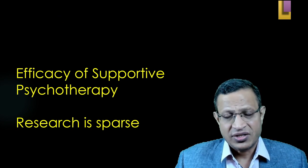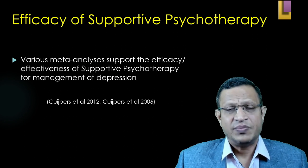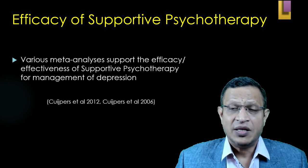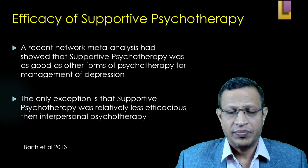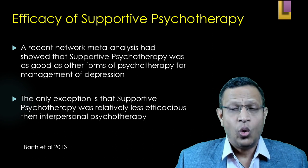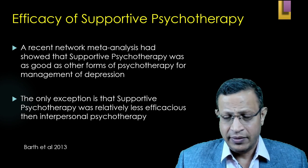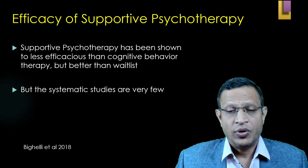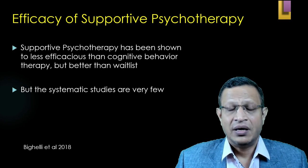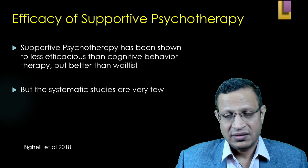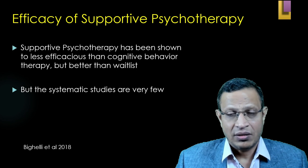Research in supportive psychotherapy is very sparse. Various meta-analyses support its efficacy in the management of depression. A recent network meta-analysis showed supportive psychotherapy was as good as other forms of psychotherapy for depression, though relatively less efficacious than interpersonal psychotherapy. It has also been shown to be less efficacious than cognitive behavioral therapy, but better than waitlist controls. There is a need for systematic studies, RCTs, and a manualized form of supportive psychotherapy.